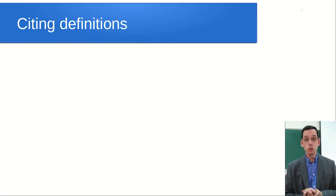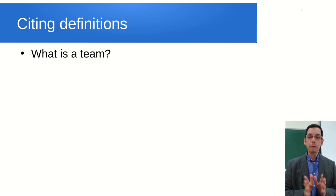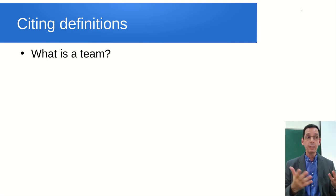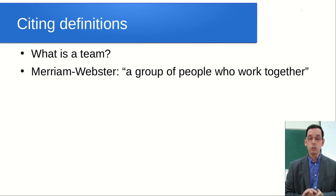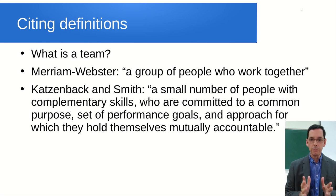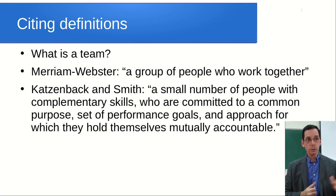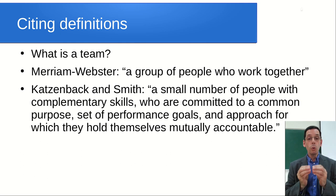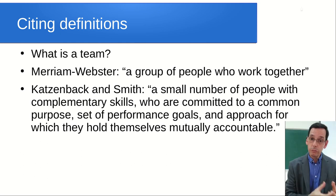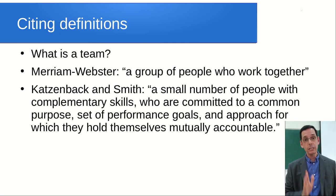Another big question students often ask is: should we cite definitions? We absolutely should. You should definitely cite definitions because different people have different definitions for the same thing. For example, the word 'team': the Merriam-Webster dictionary would say it's 'a group of people who work together.' But Katzenbach and Smith, famous academic researchers in the field of teamwork, define it as 'a small number of people with complementary skills who are committed to a common purpose, a set of performance goals and approach for which they hold themselves mutually accountable.' You need to know which definition you are using, so yes - you definitely need to cite definitions.